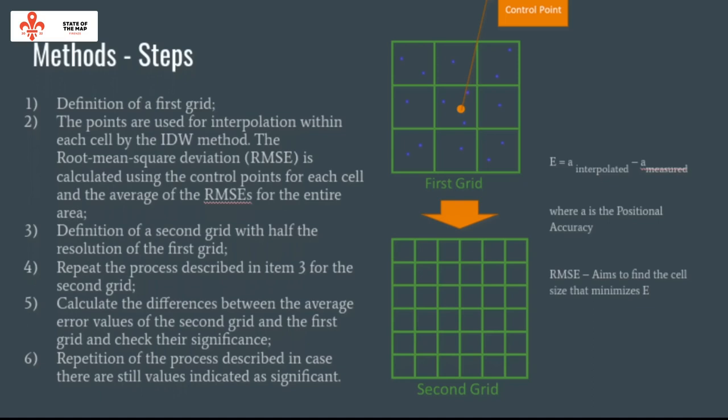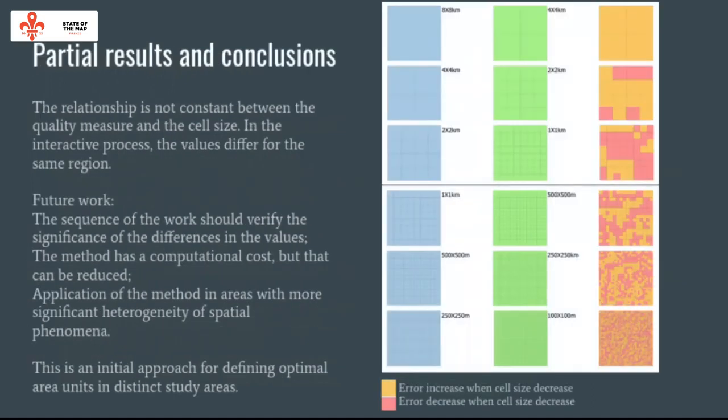This process is shown in the corresponding image. Regarding partial results and conclusions: the relationship is not constant between the quality measures and the cell size. In the iterative process, values differ across the same region, as shown in the image.